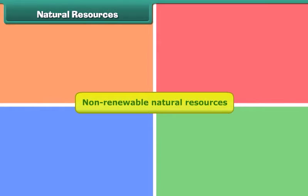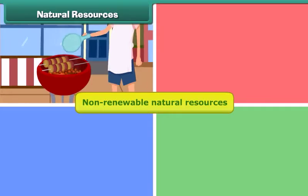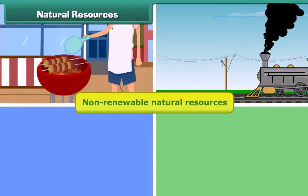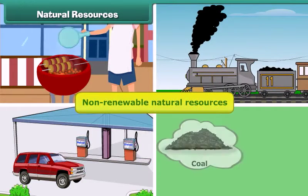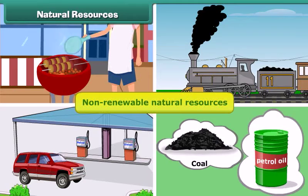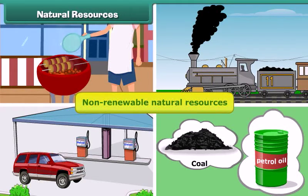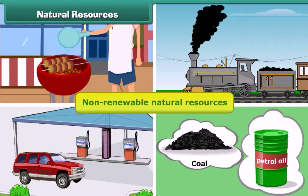Non-renewable natural resources are those resources that are limited in supply. They take years to form and get exhausted by continuous human use. For example, coal, petroleum, etc. are non-renewable natural resources.